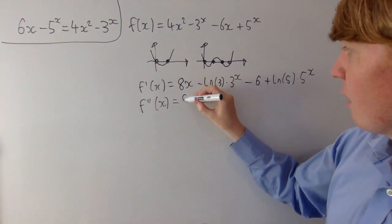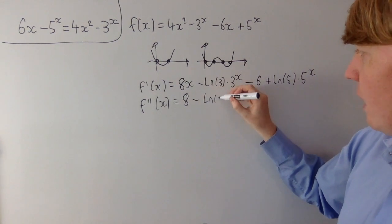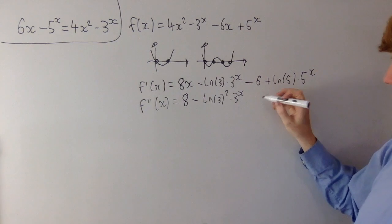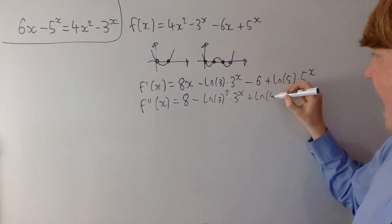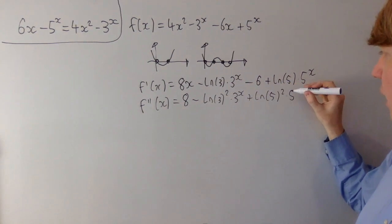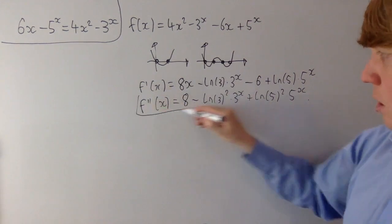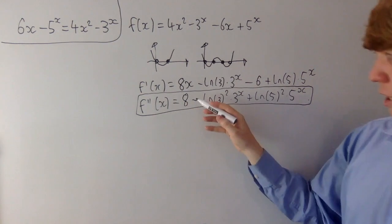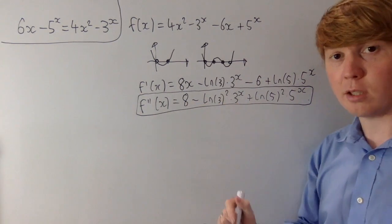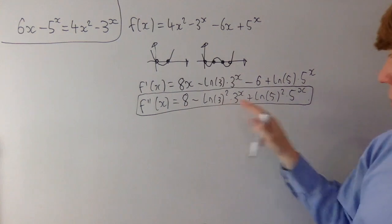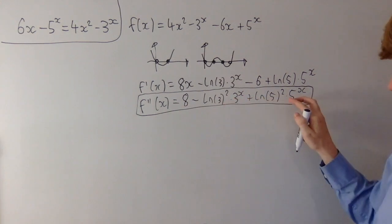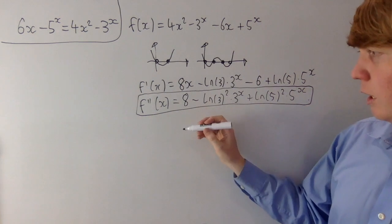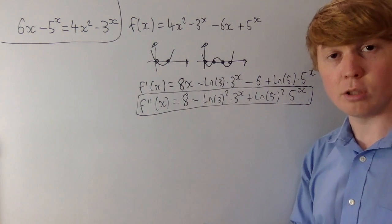So the second derivative is 8 minus ln(3) squared times 3 to the x. The 6 disappears when we differentiate, then plus ln(5) squared times 5 to the x. This looks quite promising, because the second derivative actually looks like it's always going to be positive. When x is very small or negative, these two terms will be very small, and when x is large, the last term will be very big. So it looks like the second derivative is always going to be positive.